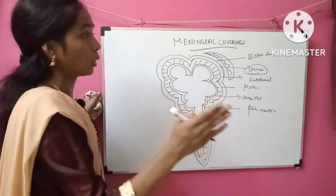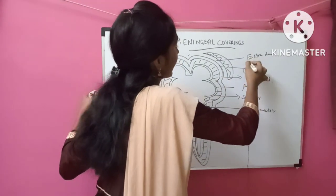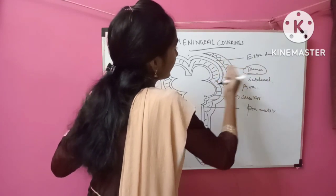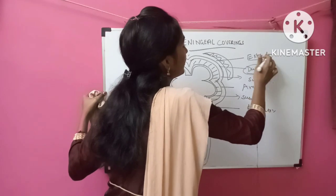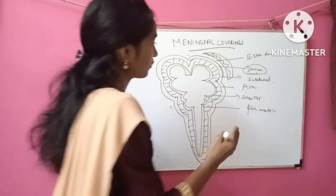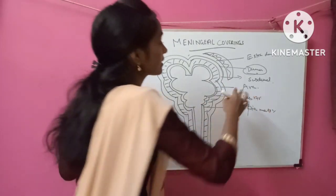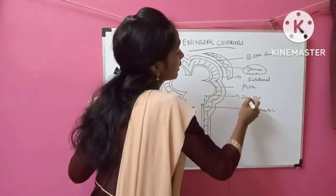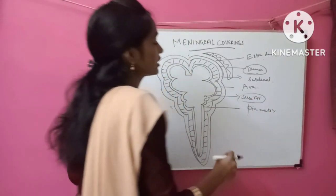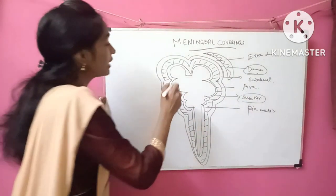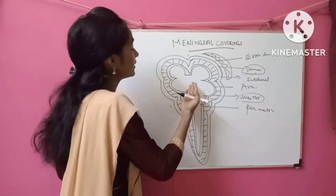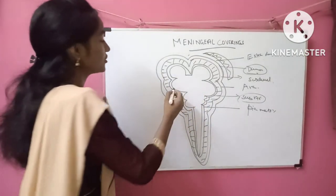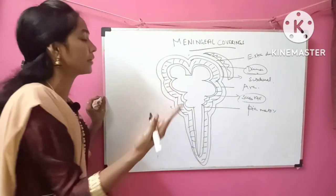If hemorrhage occurs in between the bone tissue — that is periosteum — and the dura mater, then it is epidural or extradural hemorrhage. Likewise, if the hemorrhage occurs in the subdural space, that is subdural hemorrhage. If hemorrhage occurs in the subarachnoid space, that is subarachnoid hemorrhage. If the hemorrhage occurs inside the brain, then it is intracranial hemorrhage.